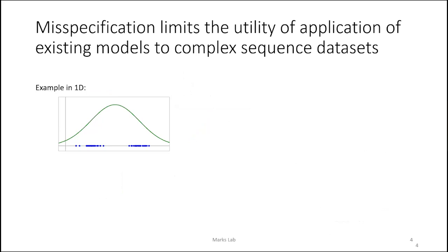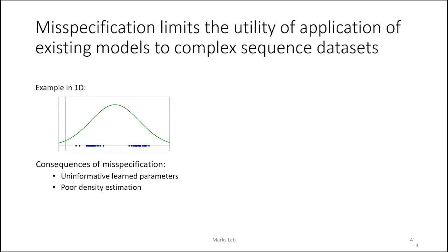Model misspecification is essentially when the model you're trying to fit cannot possibly fit the data. The example here is trying to fit a Gaussian to bimodal data. The consequences are that the parameters you fit — for example, the mean and standard deviation — aren't necessarily going to be easily interpretable, and also the density estimation will be quite poor, since the Gaussian doesn't really describe where the data is.